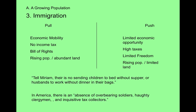Here are two quotes from people writing back to Europe, both extremely hopeful. The first says, 'Tell Miriam, there is no sending children to bed without supper in America or husbands to work without dinner in their bags again in America.' People in America are writing back to Europe saying if you come to America, there's no starvation, everybody has economic opportunity, jobs are plentiful — come. Another quote: 'In America there is an absence of overbearing soldiers, haughty clergymen, and inquisitive tax collectors.' If you're in Europe and you get these messages, you're like, well, why not? So for all of these reasons, immigration starts to increase again after the War of 1812.